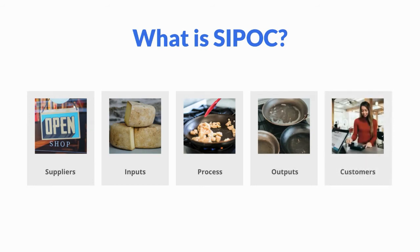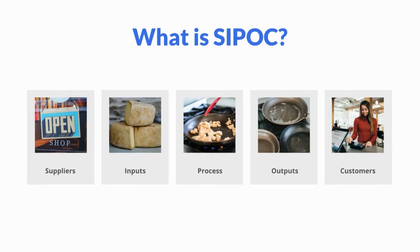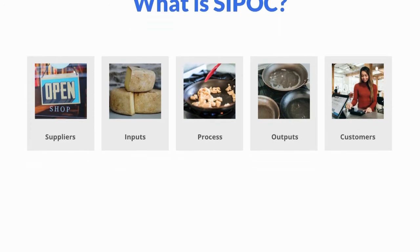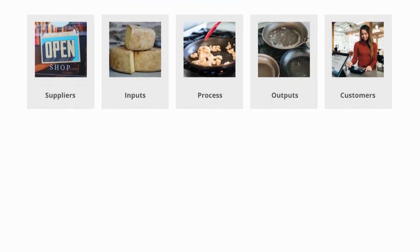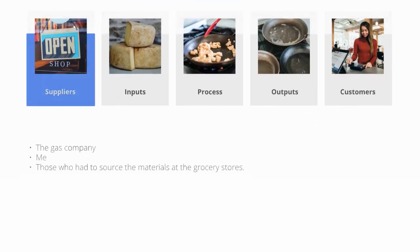In practice, SIPOC is a process map that gives an in-depth overview of the inputs and outputs of a process or a combination of processes. We will use making a grilled cheese as our example process, starting with Suppliers.